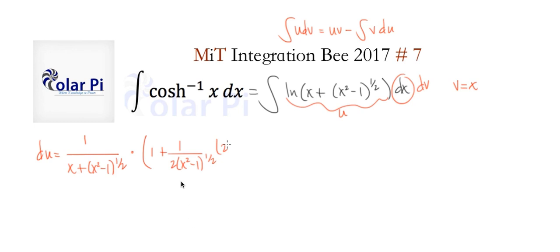And again we have to multiply by two x, the derivative of x squared minus one, to apply the chain rule correctly all the way through. This actually, believe it or not, simplifies pretty nicely.